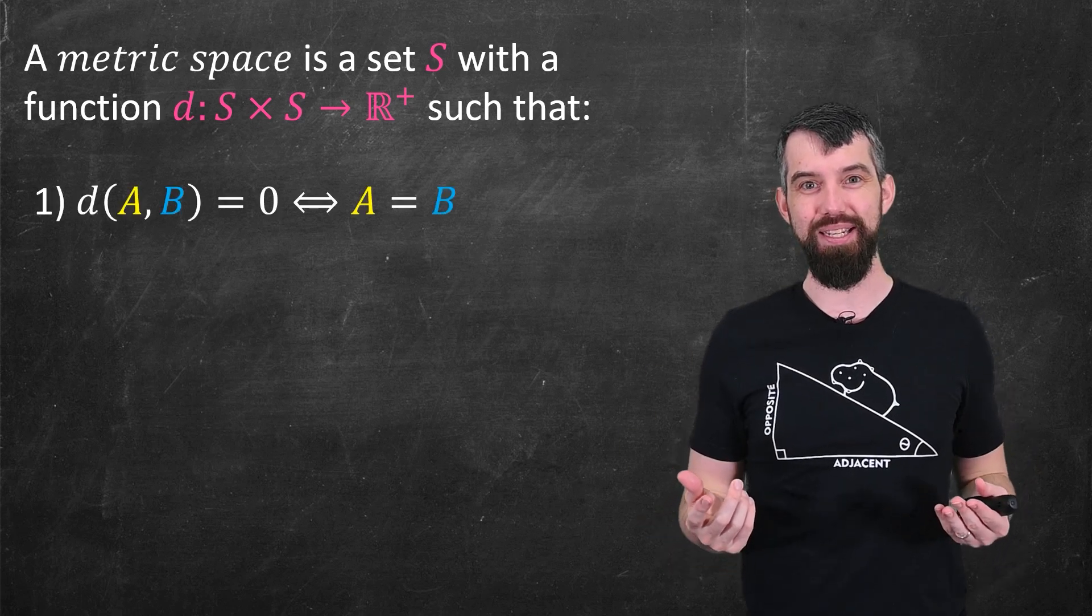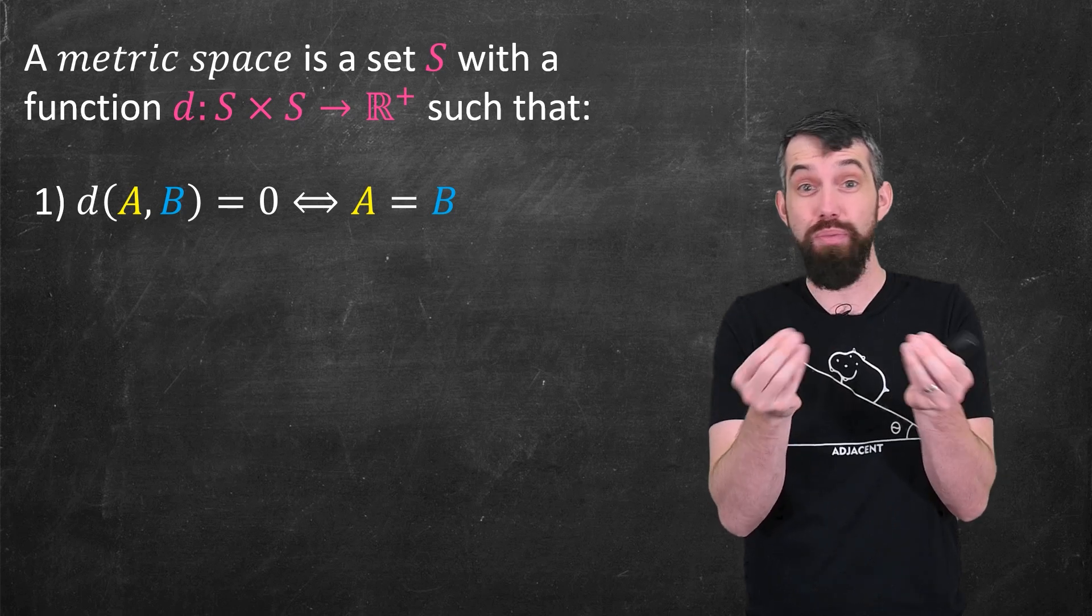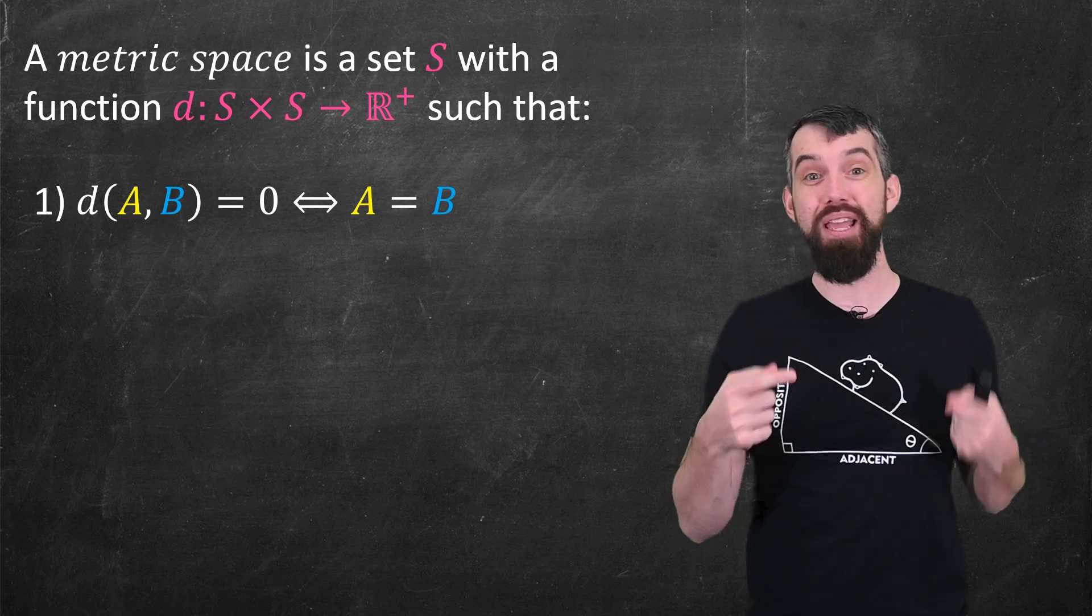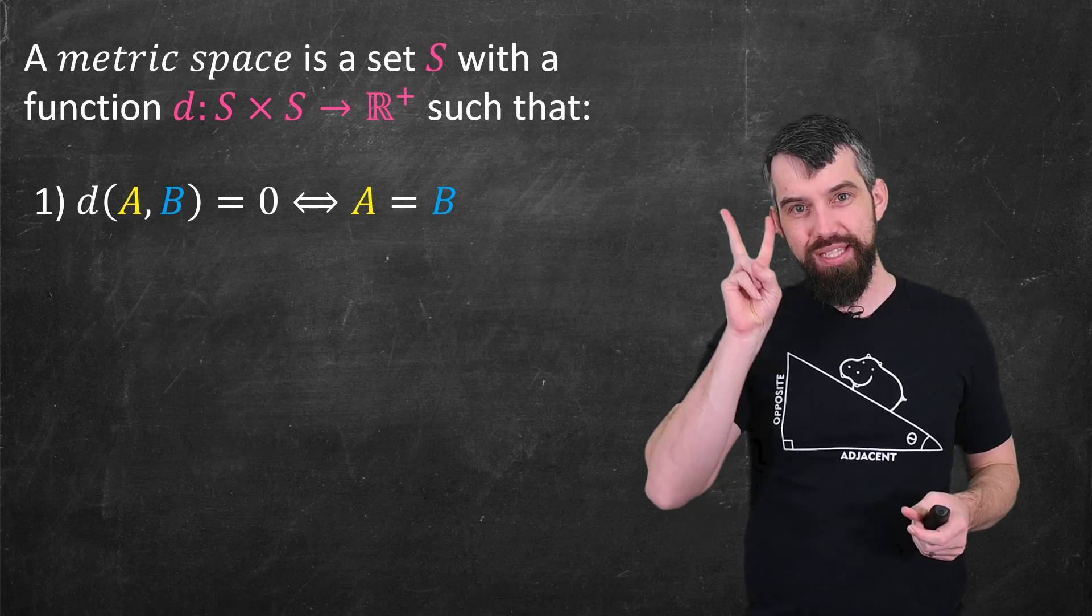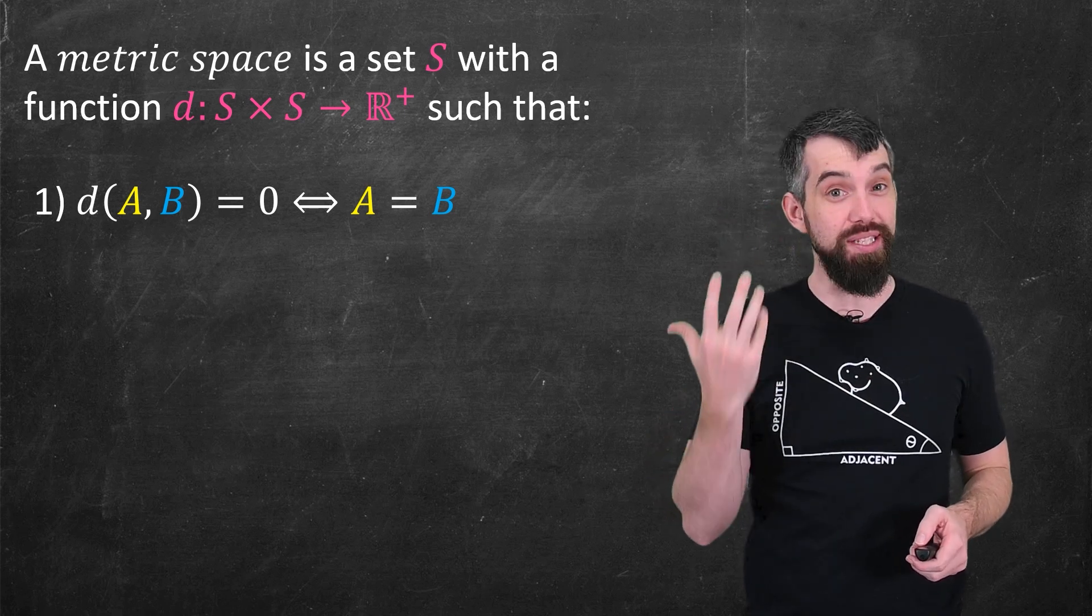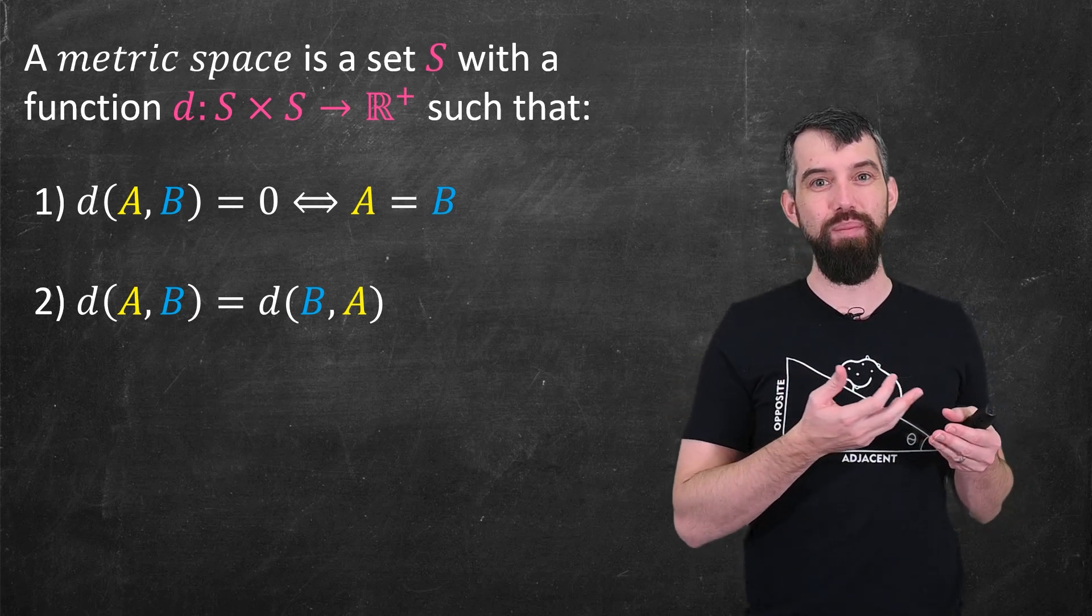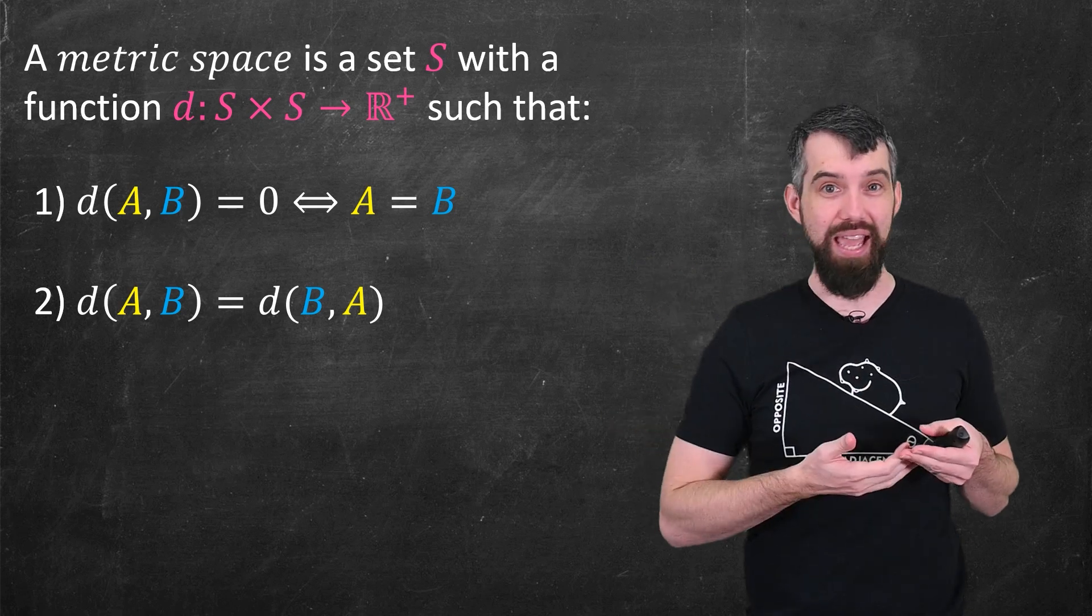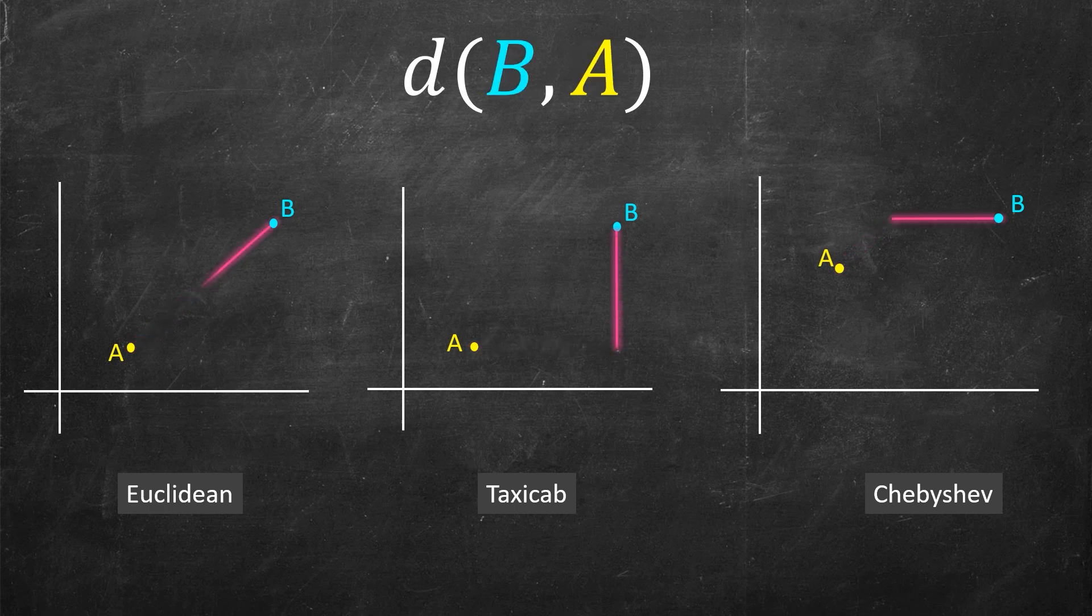So the first property is that if you have two points and the distance between them is zero, then those two points are actually the same point. In other words, the distance between A and B is equal to zero, and it has to go both directions if and only if A is equal to B. The second property is called symmetry, and it says that it doesn't matter which you put first, the A or the B. The distance from A to B is the same thing as the distance from B to A. We can see that in all of our metrics. It doesn't matter which you put first, the distance between them is always going to be the same.